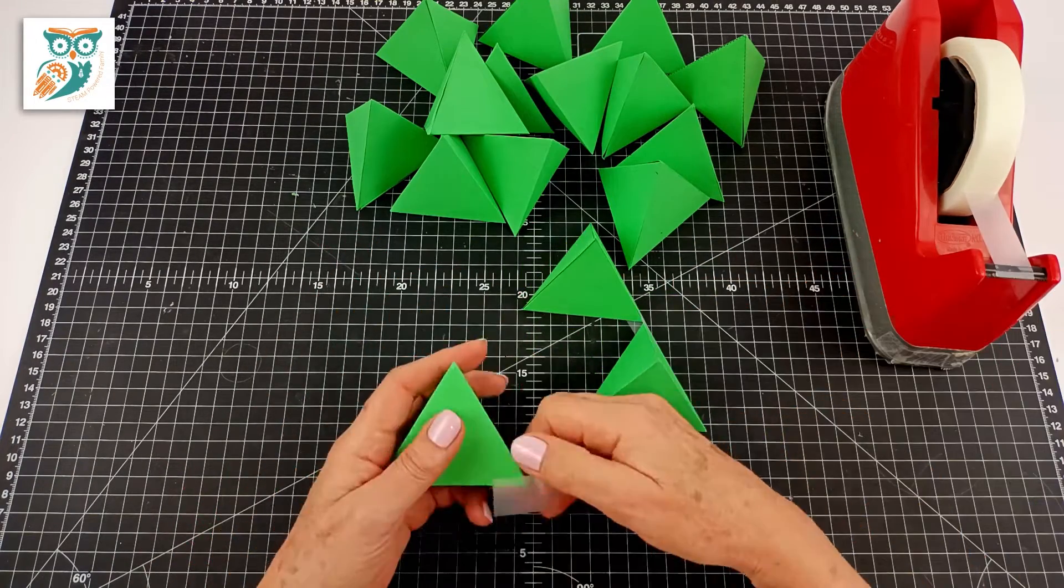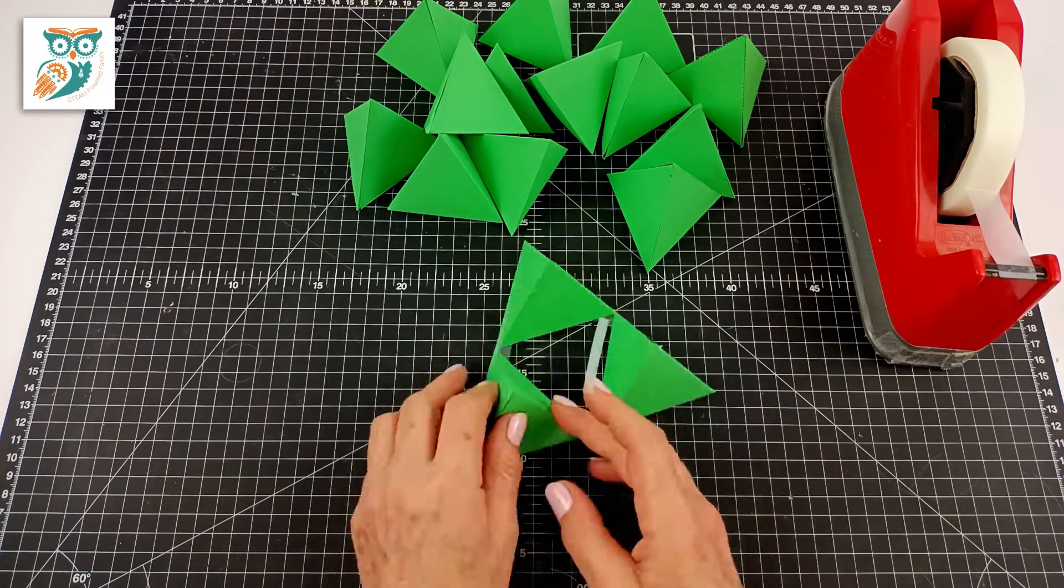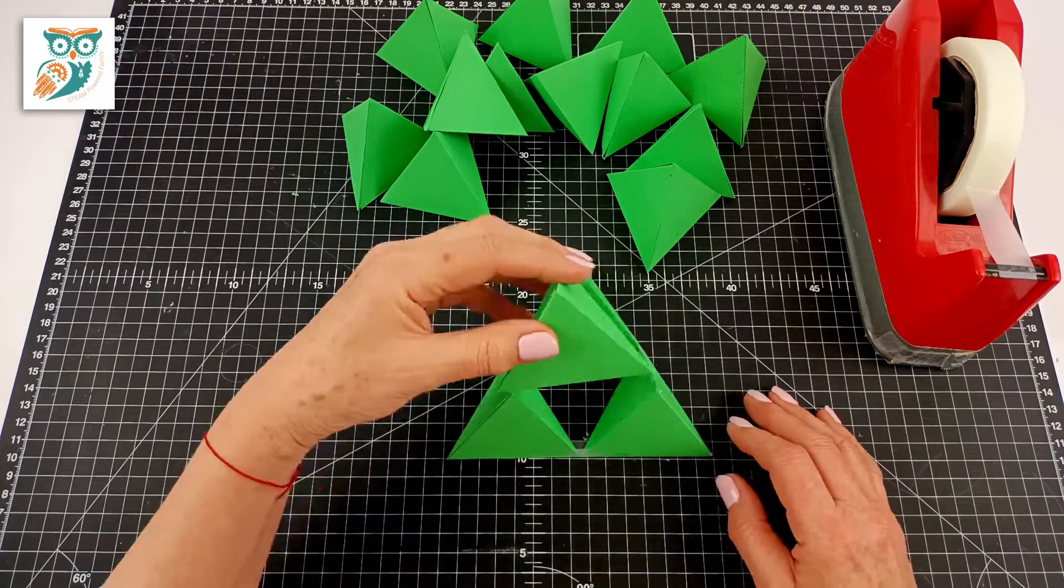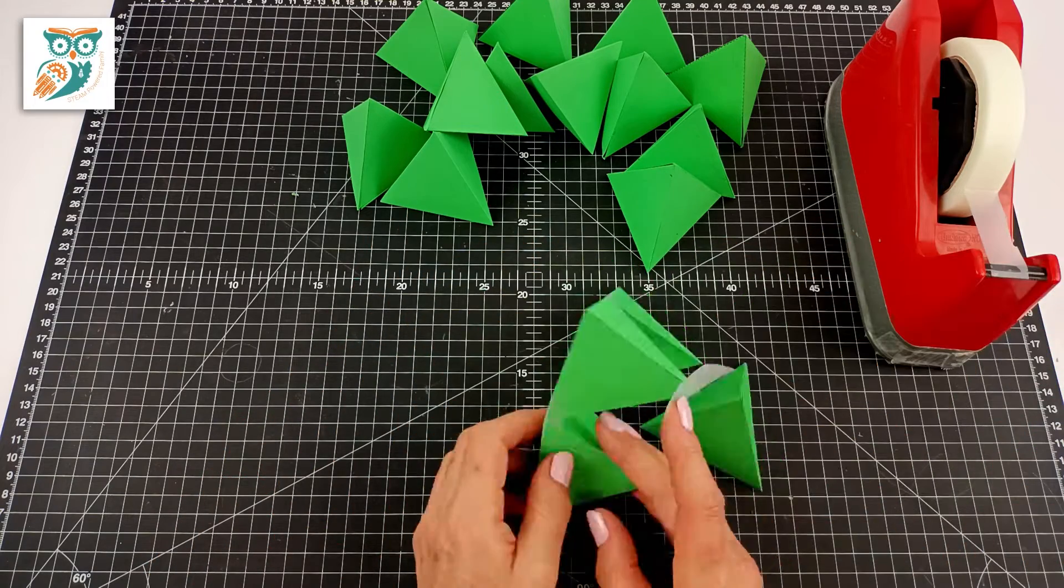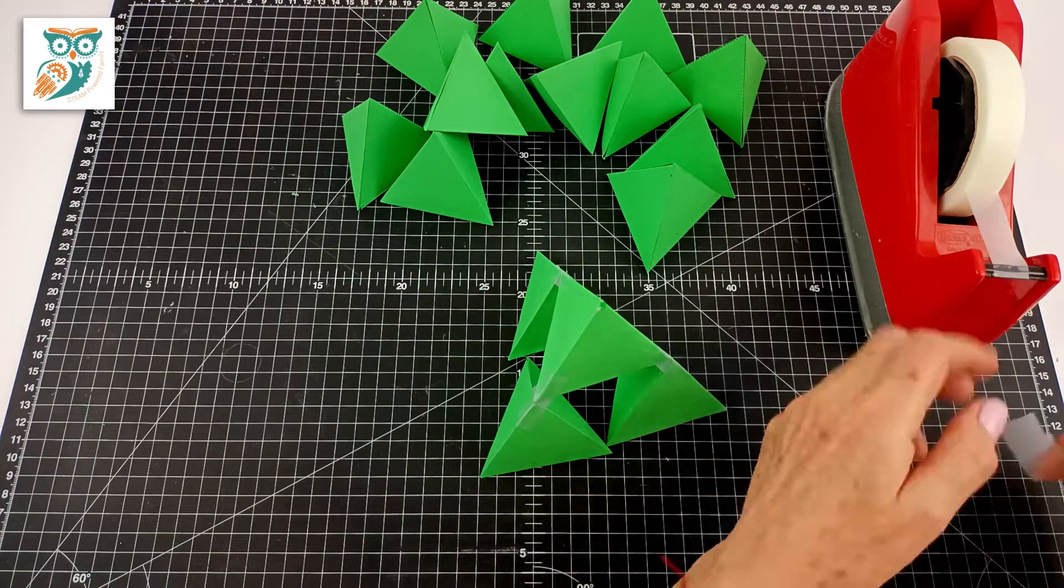And then we're going to tape three together like this and making the base. And eventually we're going to attach all of these different pyramids together to make one big Christmas tree style one. We've got four on there.